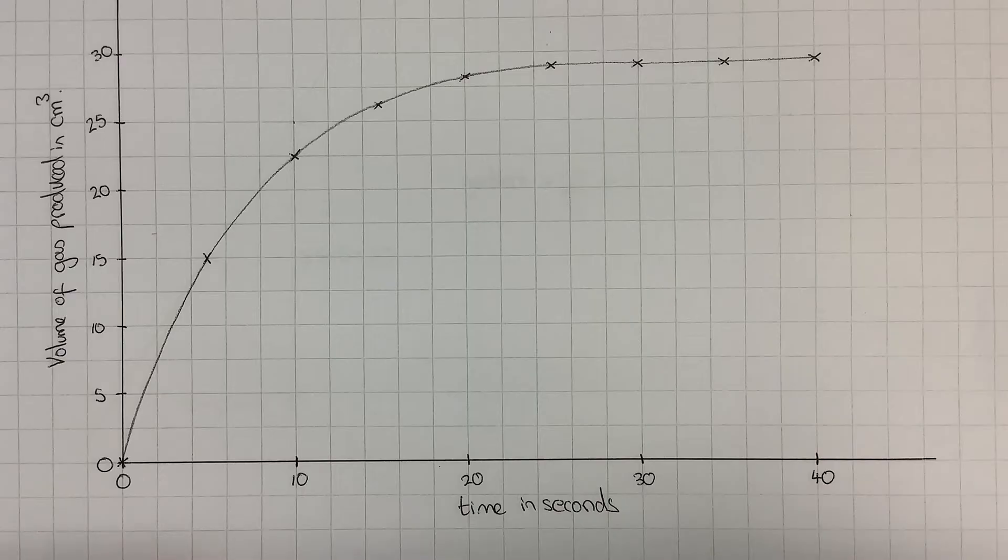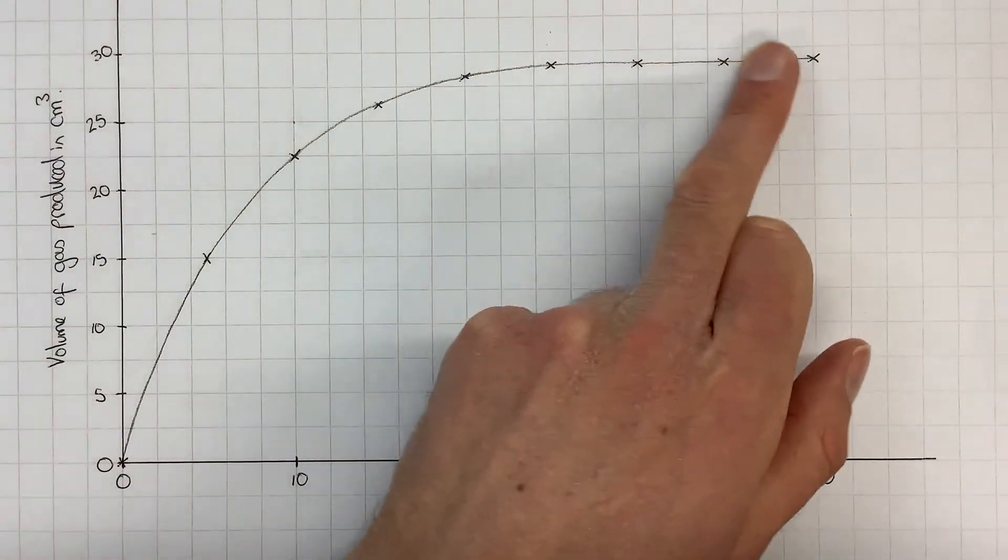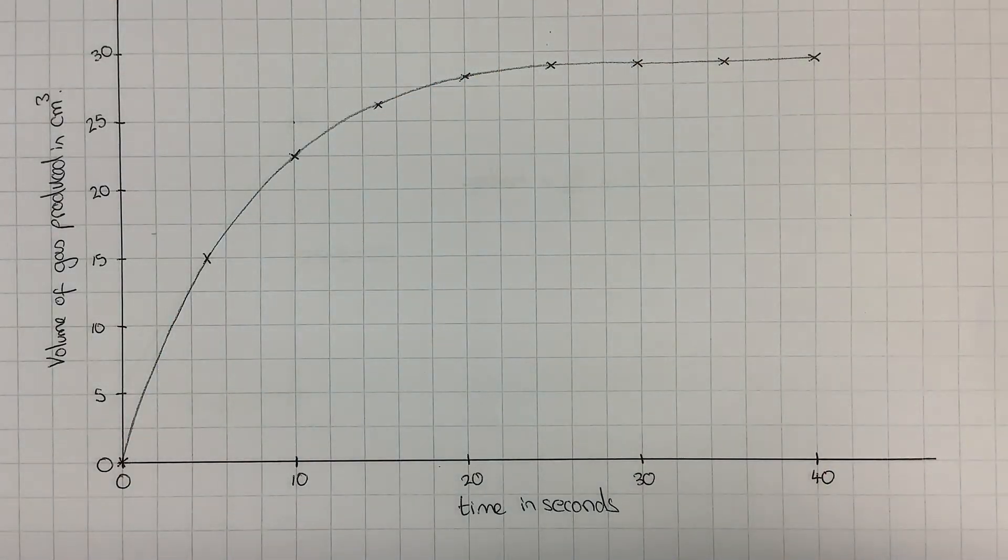The tricky thing with this is that the rate of reaction is different as we progress through all those different times. So we've got to find what's called the instantaneous rate of reaction.